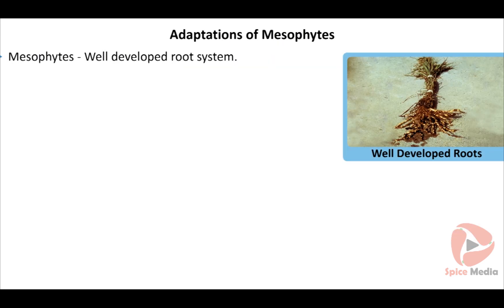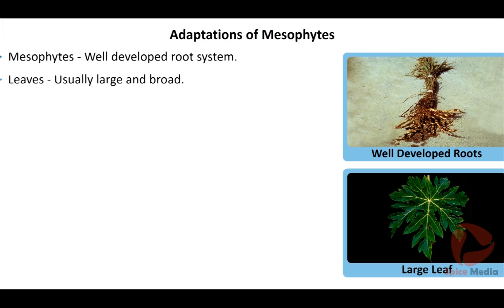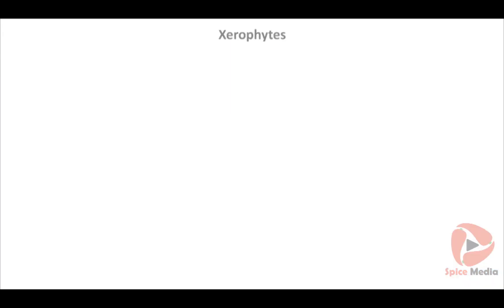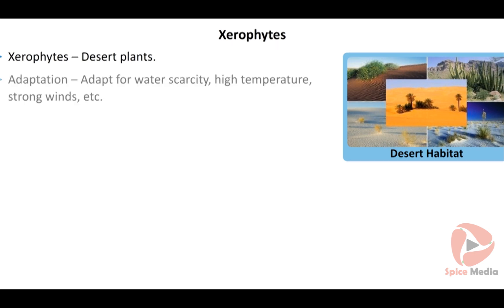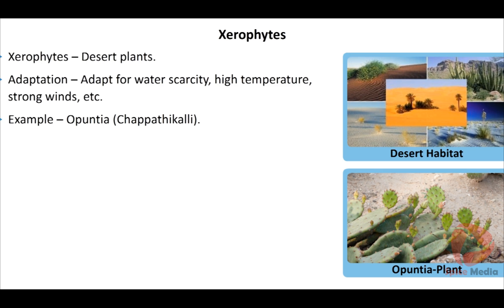Mesophytes have a well-developed root system. Leaves of mesophytes are usually large and broad. Xerophytes means desert plants — 'xero' means desert and 'phytes' means plants. Plants which grow in dry areas are called xerophytes. Their body is adapted to cope with water scarcity, high temperature, strong winds, etc. Example: opuntia.